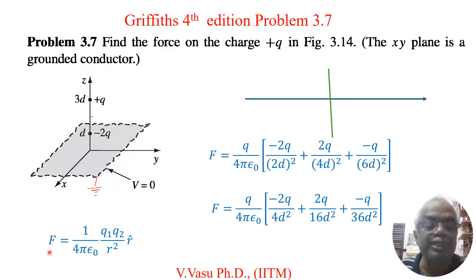The force due to charges Q1 and Q2 is equal to 1 over 4 pi epsilon naught Q1 Q2 divided by R squared R hat. Now we can solve this problem very easily using the image charges. I am redrawing this diagram.